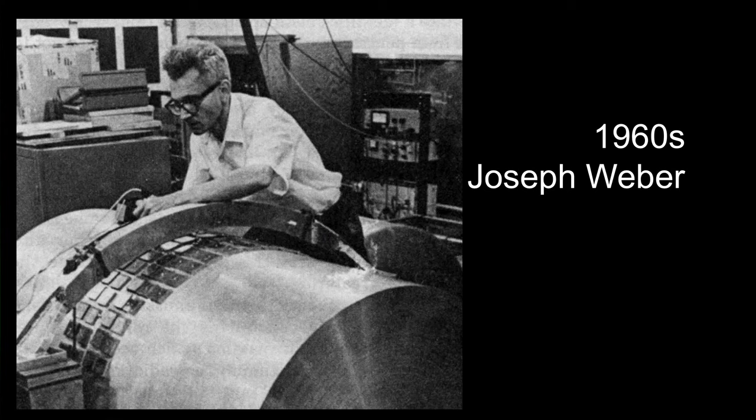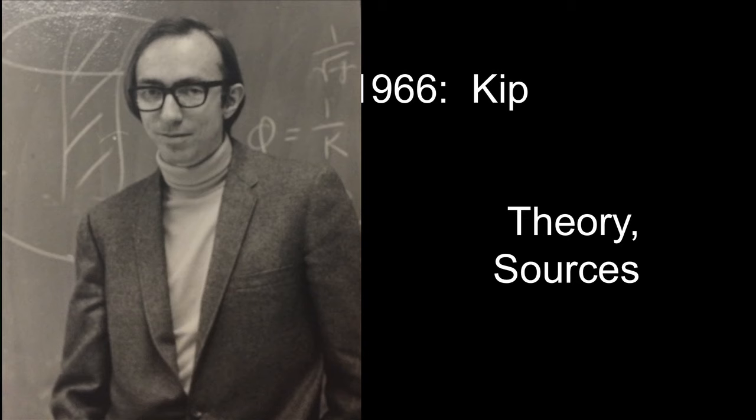Joseph Weber at the University of Maryland was the first person to have the chutzpah to think he might be able to detect gravitational waves. He developed gravitational wave detectors. Evidence that he thought was evidence of gravitational waves turned out not to be, but he pioneered the field, pointed it in a very fruitful direction, and the rest of us built on that. This is me in 1966 — I moved the hair off my head onto my chin.